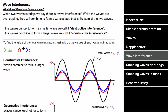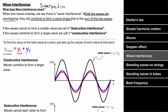When two waves overlap in the same medium, it's called wave interference or wave superposition. While the waves are overlapping, they combine to form a wave shape that is the sum of the two waves — you just add up the individual wave values. If you overlap two identical waves, they combine to form a wave twice as big, which is called constructive interference.